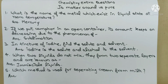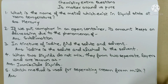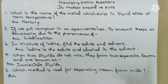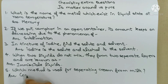Next question: Which method is used for separating cream from milk? For separating components of milk, we use the centrifugation method. In a test tube, it is highly spun, and denser particles settle at the bottom while lighter particles move to the top. The answer is centrifugation.